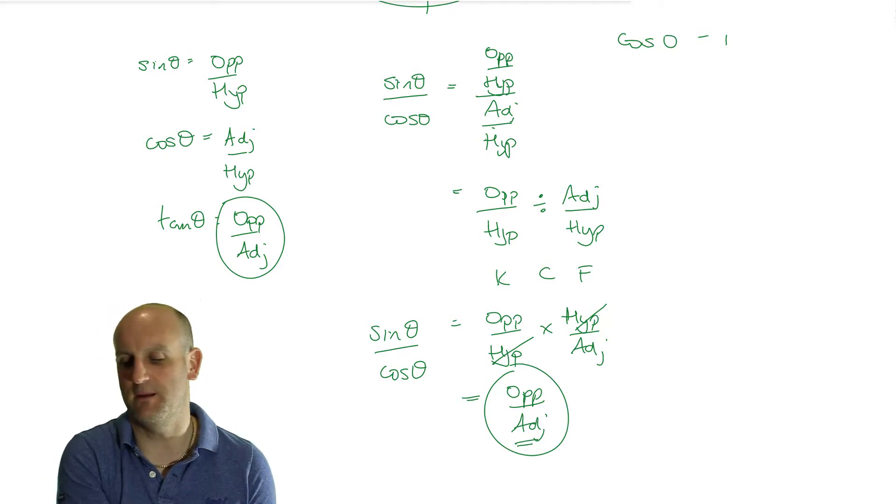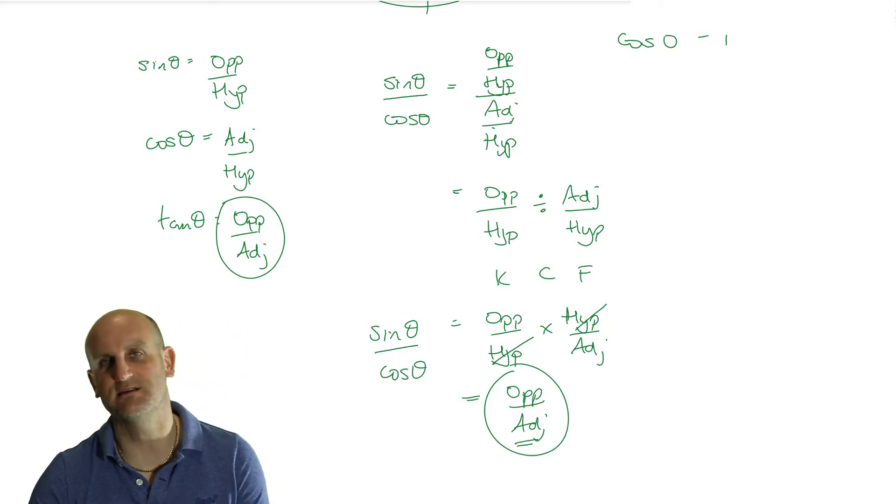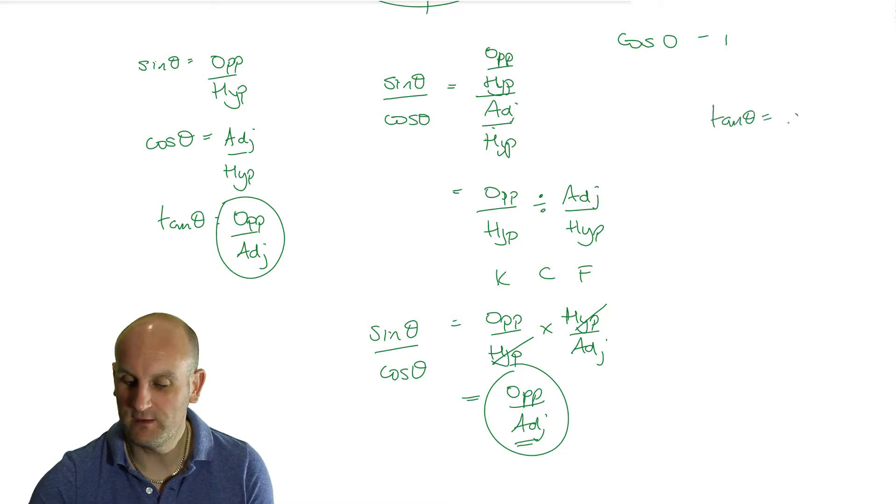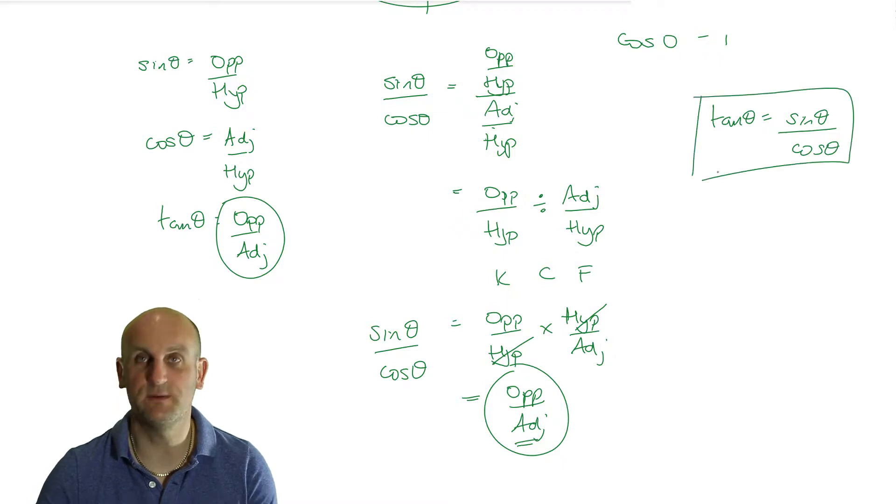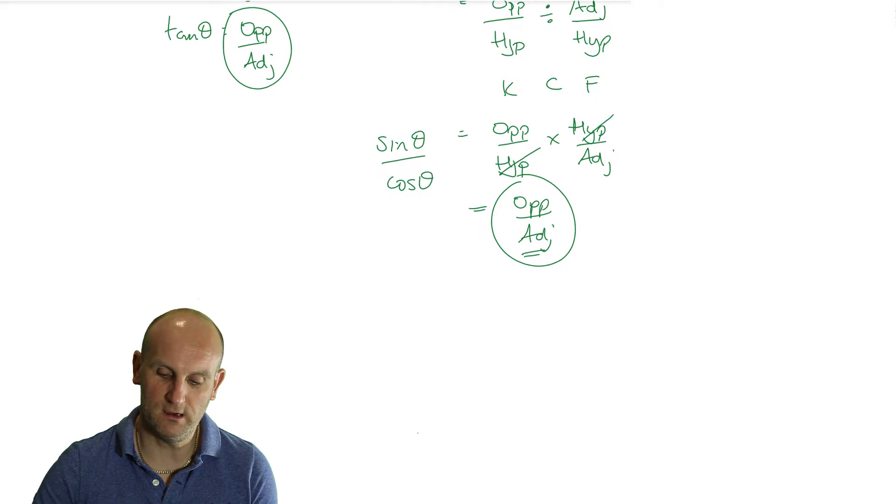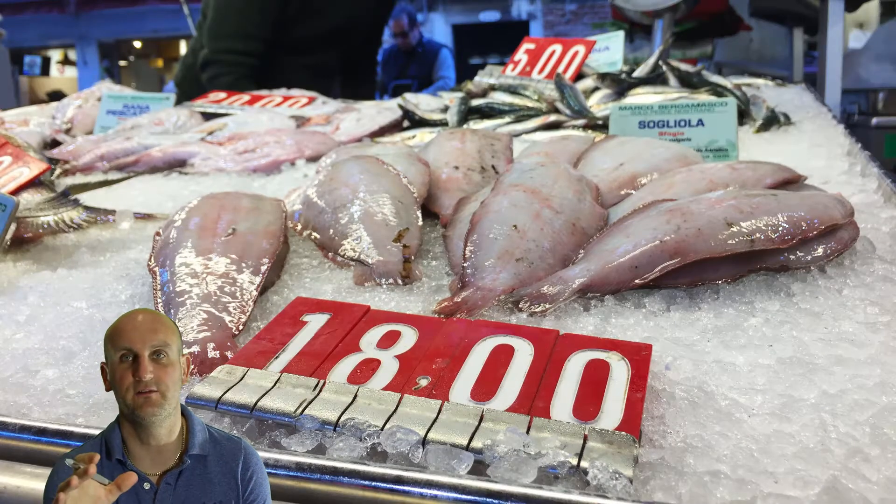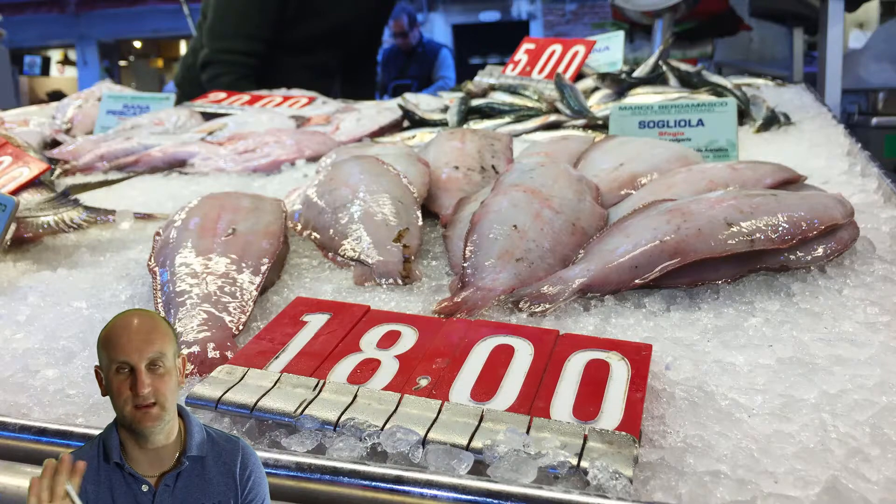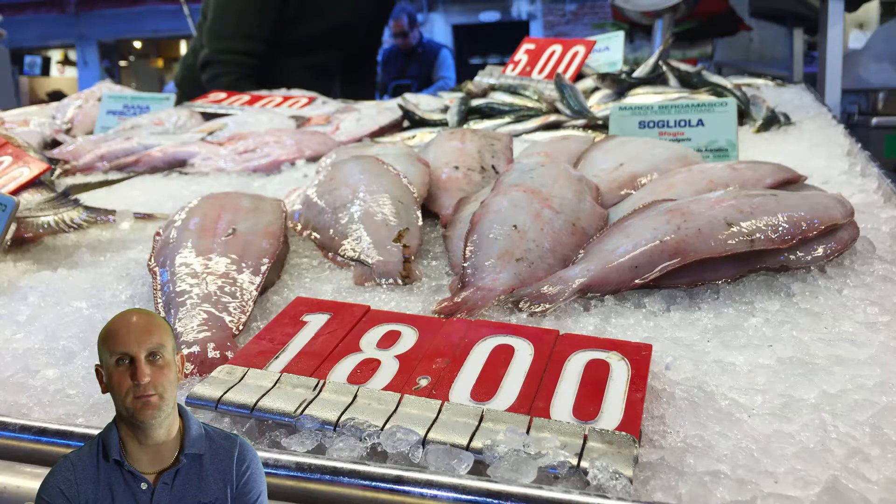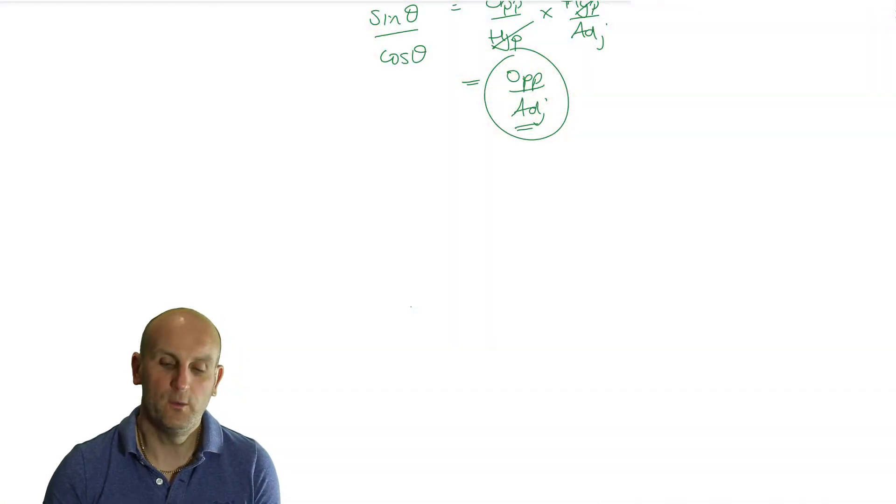And one of the most important identities in mathematics, and in fact, there's lots of them, but this is pretty important, is that tan theta is equal to sine theta divided by cosine theta. Please, please, please learn that. It is so, so important. And you're going to say, well, all right then. So what does that got to do with the price of fish? I've got no idea where that expression has come from me. Nothing to do with price of fish.